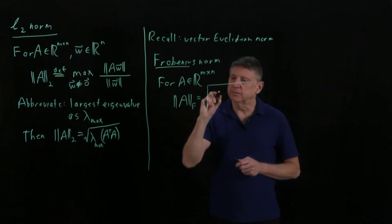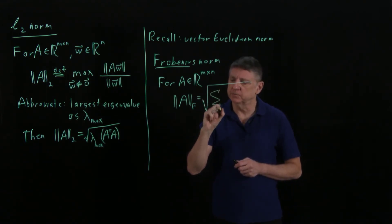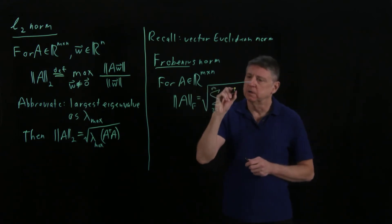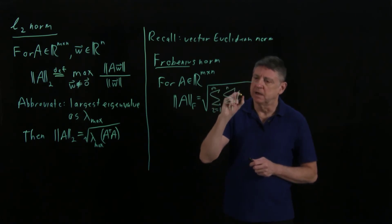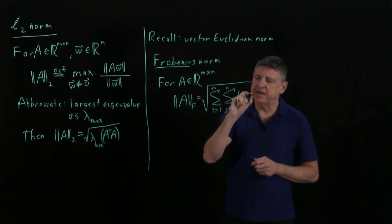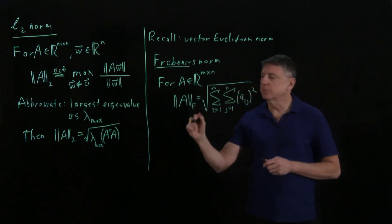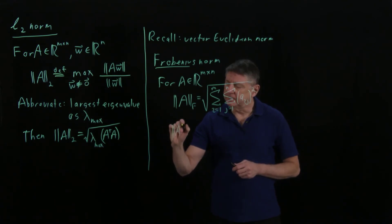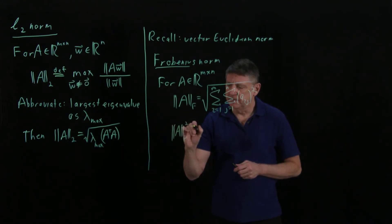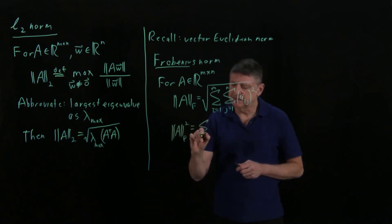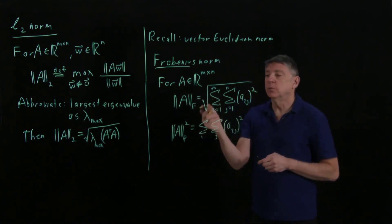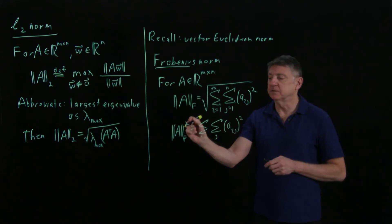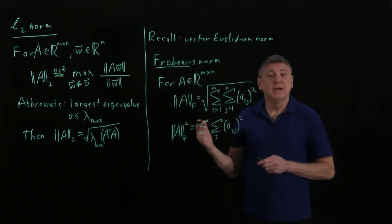The Frobenius norm is the sum as i goes from 1 to m — the sum over all rows — of the sum over all columns of entry a_{ij} squared. Another way to write this is: the square of the Frobenius norm equals the sum over all i, sum over all j, of a_{ij} squared. Sometimes people define this as the Frobenius norm, sometimes as the square of the Frobenius norm — it's the same concept.